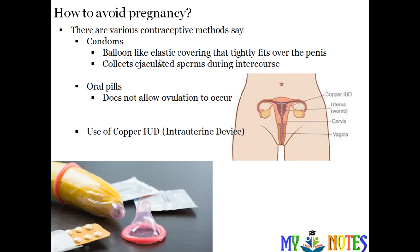Condoms are basically a balloon-like elastic covering that tightly fits over the penis. It collects ejaculated sperms during intercourse. When sperm is released, it is stored inside the condom so it cannot make contact with the egg, thus preventing fertilization.